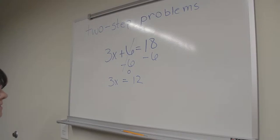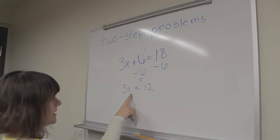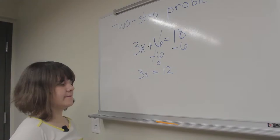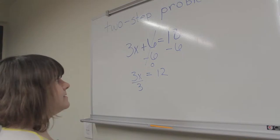The next step is we have to get x by itself. And this 3 in front of the x, the coefficient, is showing that it's 3 times whatever the value of x is. So what's the opposite of multiplication? Division. So in order to get x by itself, we need to divide by 3.